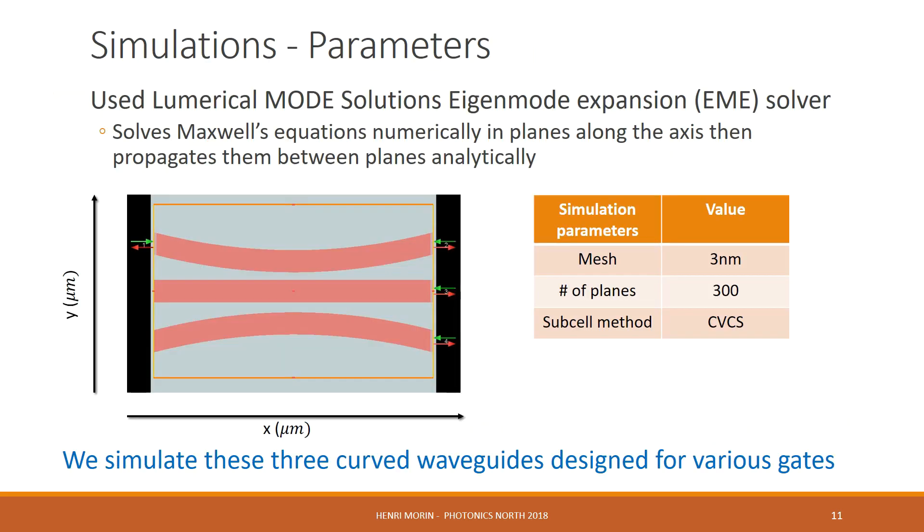As for simulations, we are using numerical mode solutions eigenmode expansion solver. This solves Maxwell's equations numerically in planes along the axis, and then propagates between the planes analytically. We have 3 nanometer mesh, 300 planes, and a continuously varying cross-section sub-zone method. The plot to the left is simply a screenshot of our device within the numerical software.